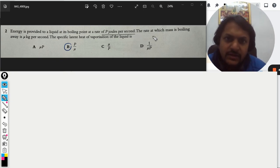The rate at which the mass is boiling away is μ kg per second. The specific latent heat of vaporization of the liquid is... So first of all, whenever we are going to heat a substance, there are two cases.